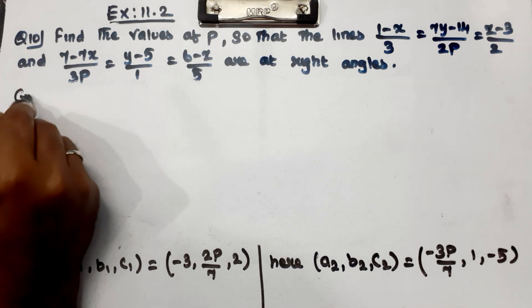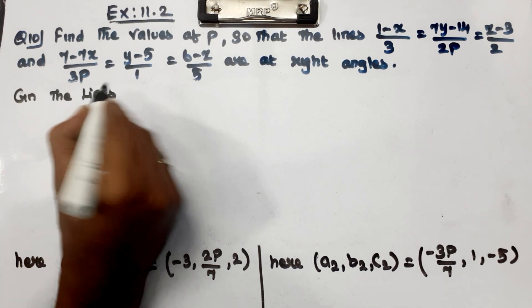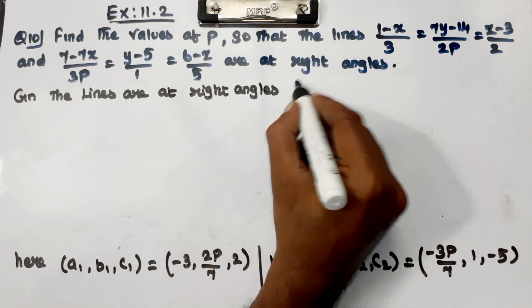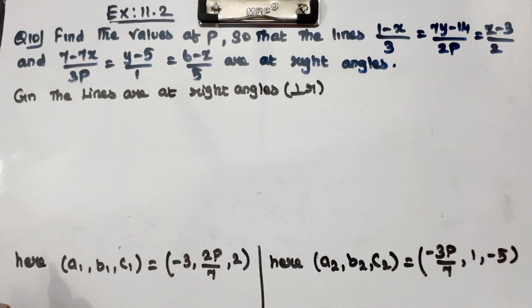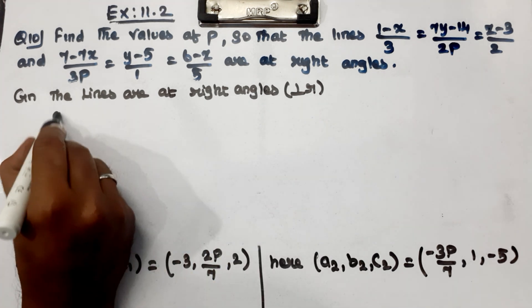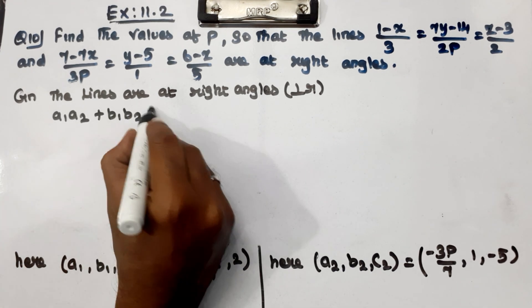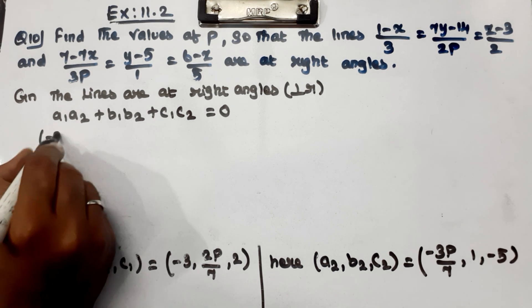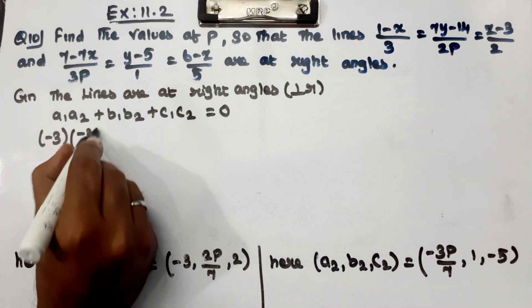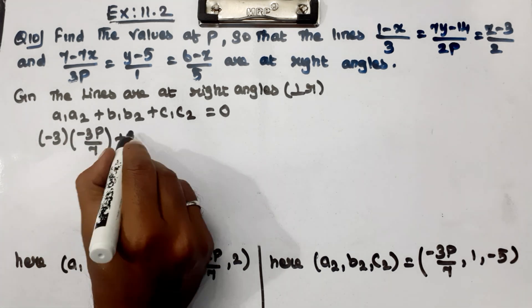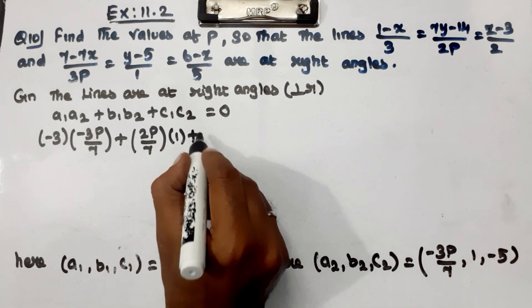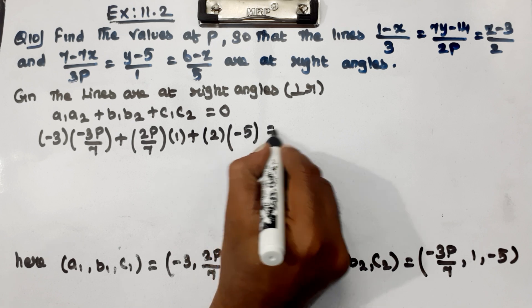Given the lines are at right angles, perpendicular. Here is the equation a1a2 plus b1b2 plus c1c2 equal to 0. Substitute a1 minus 3, a2 minus 3p by 7, plus b1 2p by 7 into 1, plus c1 2 into c2 minus 5 equal to 0.